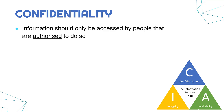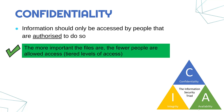The C stands for confidentiality. This is the idea that information should only be accessed by people that are authorised to do so. If you are authorised, it means you've been given permission — maybe you are an employee, maybe you are working on that particular file, and only you should be able to access it. The more important the files are, the fewer people are allowed access. That is a good example of confidentiality. You should only allow access to people who actually need it, and this idea of having different levels of access is called tiered levels of access.